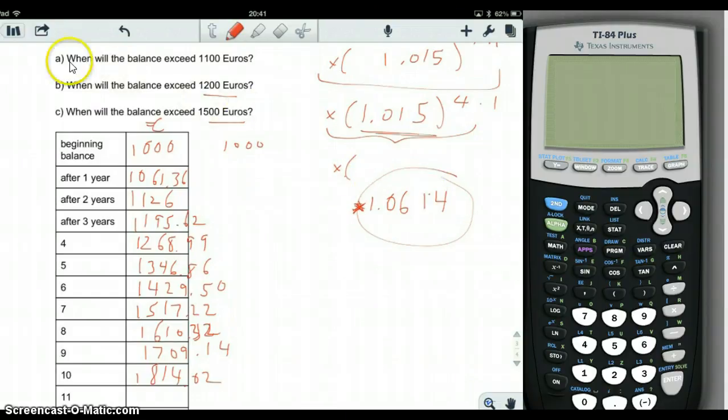And now, I think we've already answered the question: when will the balance exceed 1,100 euros? Well, let's see. After 2 years, right? After 2 years, it's 1,126. Although 1,061, if you round it up, is 1,100. The balance only exceeds 1,100 euros after 3 years, okay?